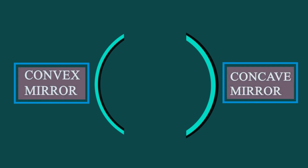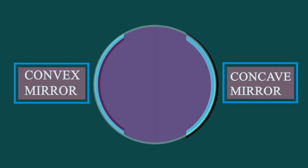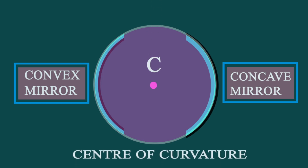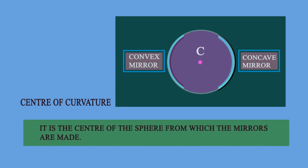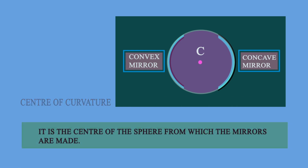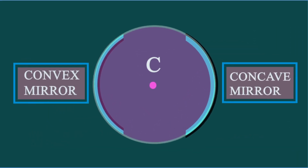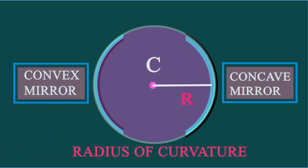The convex mirror and concave mirror are parts of a sphere. Naturally the sphere will have a center, so this center is known as the center of curvature and it is denoted as C. The center of curvature is the center of the sphere from which the mirrors are made. Since the sphere has a center, it will definitely have a radius, so this radius is known as the radius of curvature and is denoted as capital R.